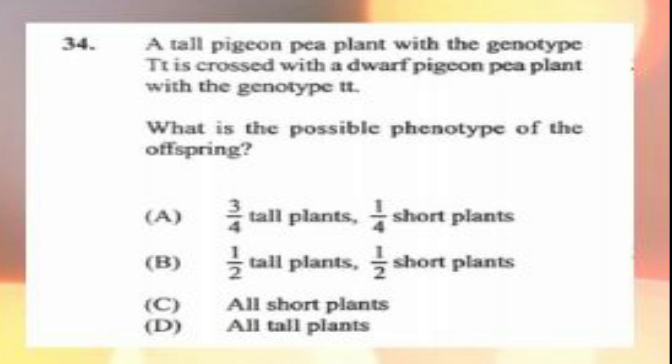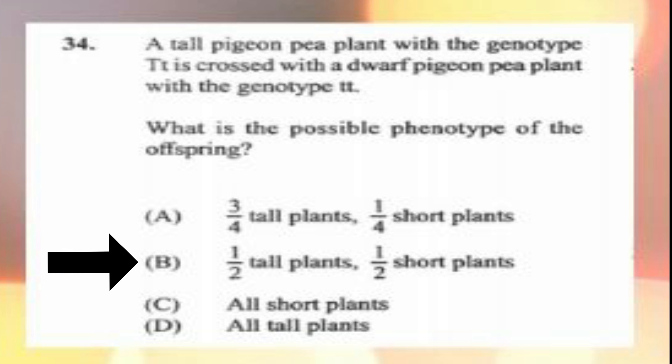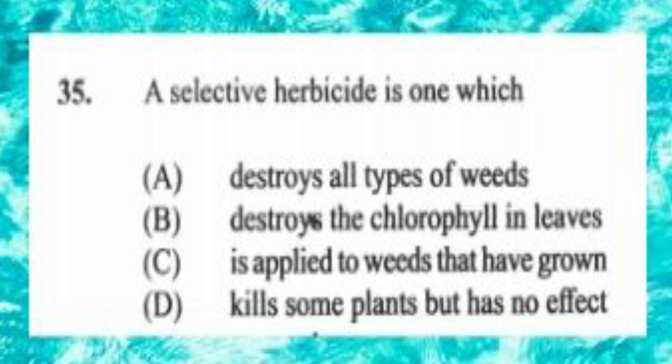Question number thirty-four: a tall pigeon pea plant with a heterozygous genotype is crossed with a dwarf pigeon pea plant with a purebred recessive genotype. What is the possible phenotype of the offspring? A) three-quarter tall to quarter short, B) half tall to half short, C) all short, D) all tall. The answer is B, half tall plants to half short plants.